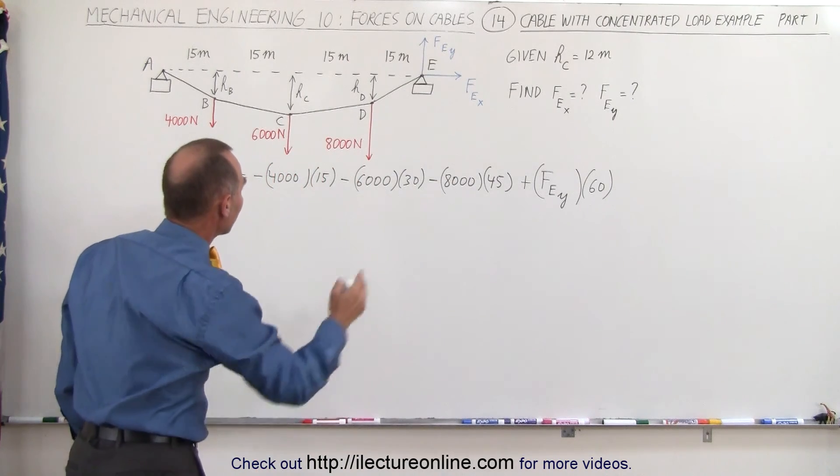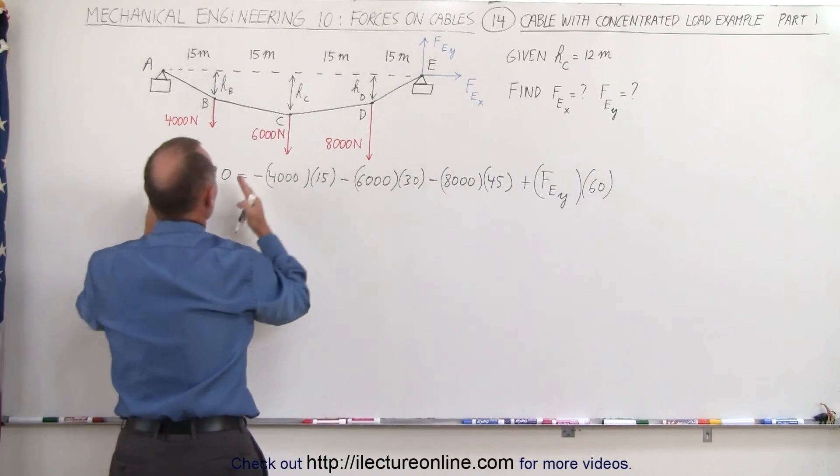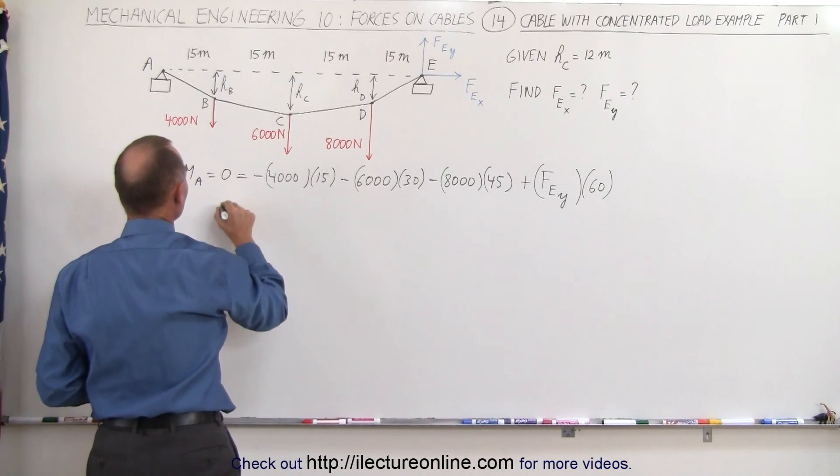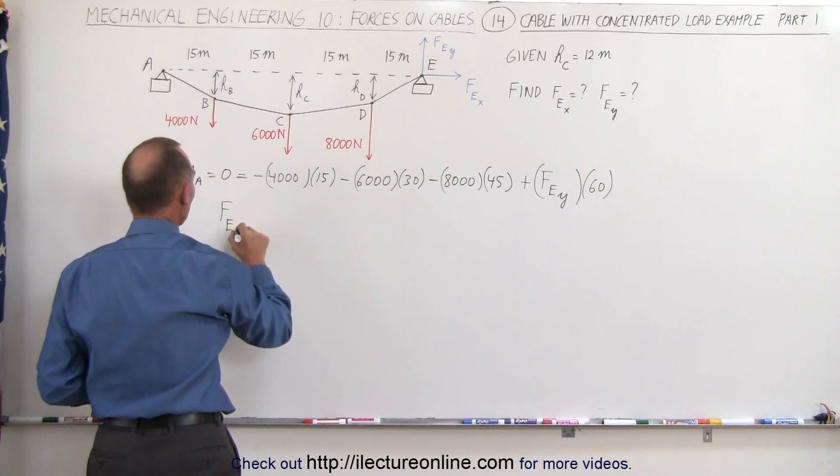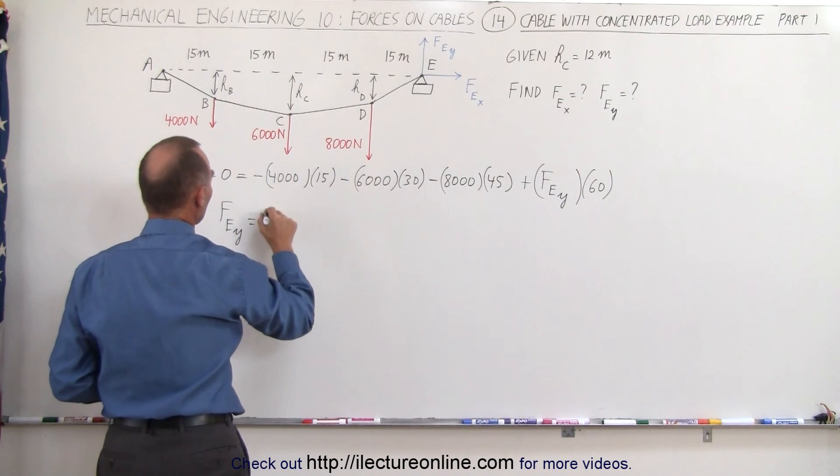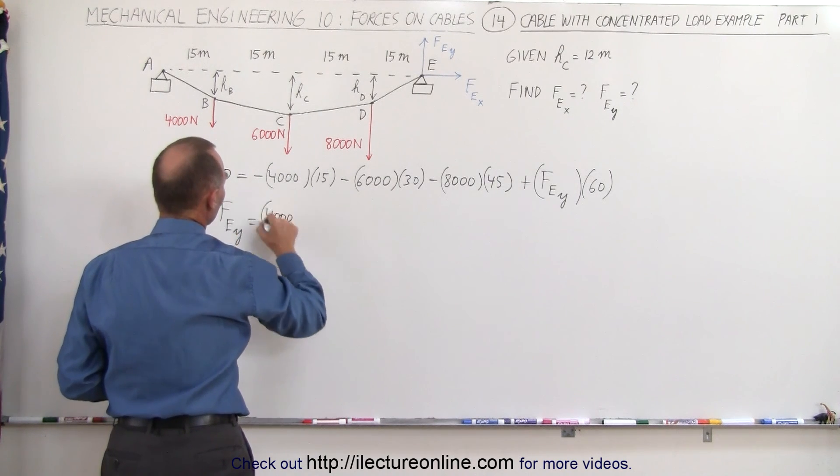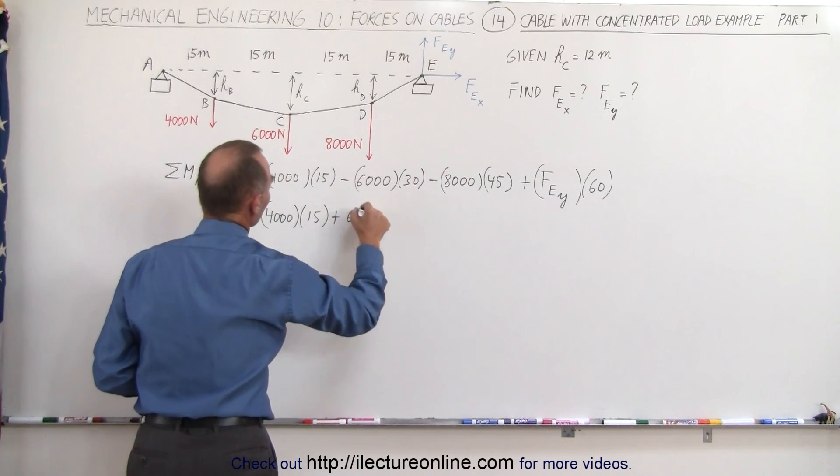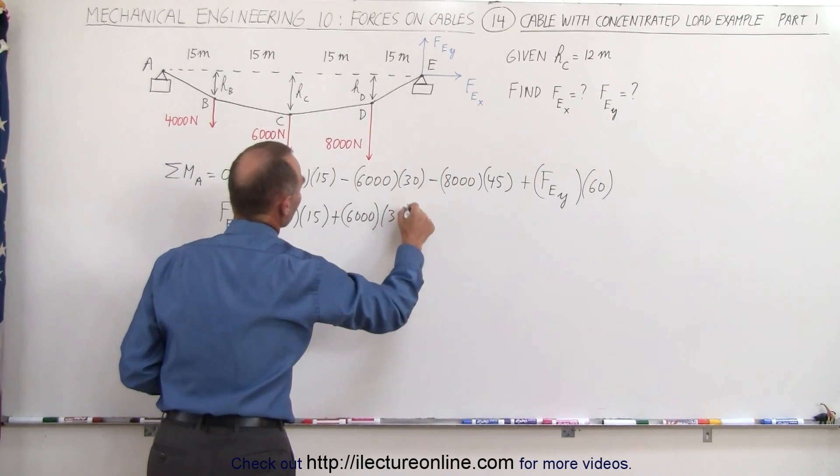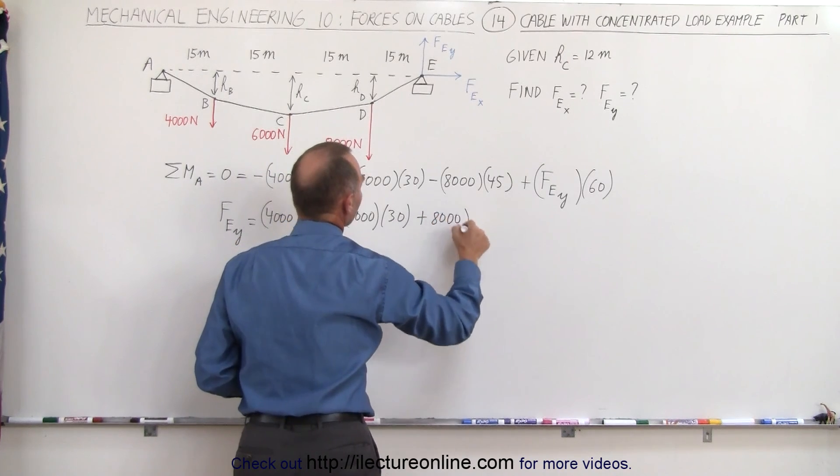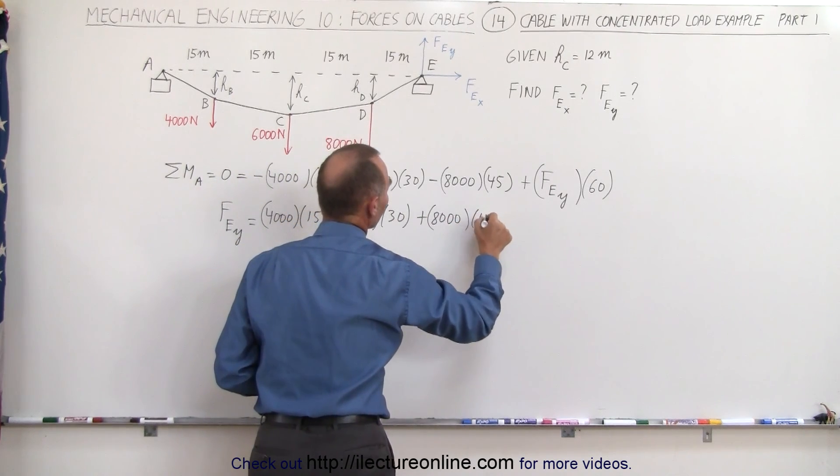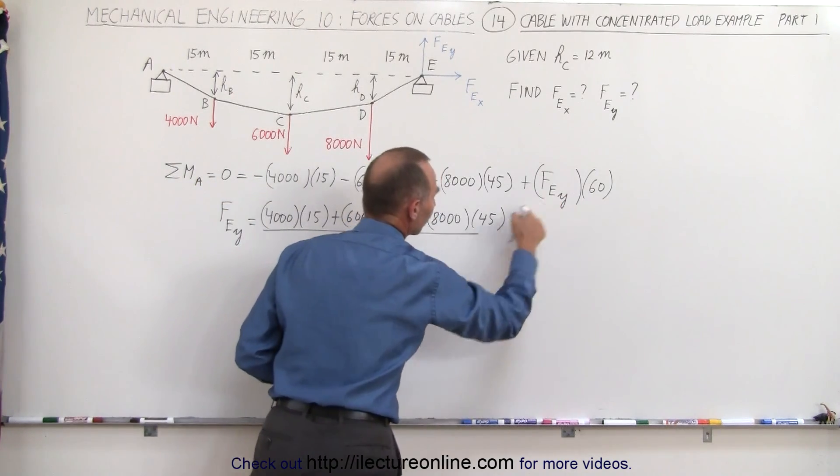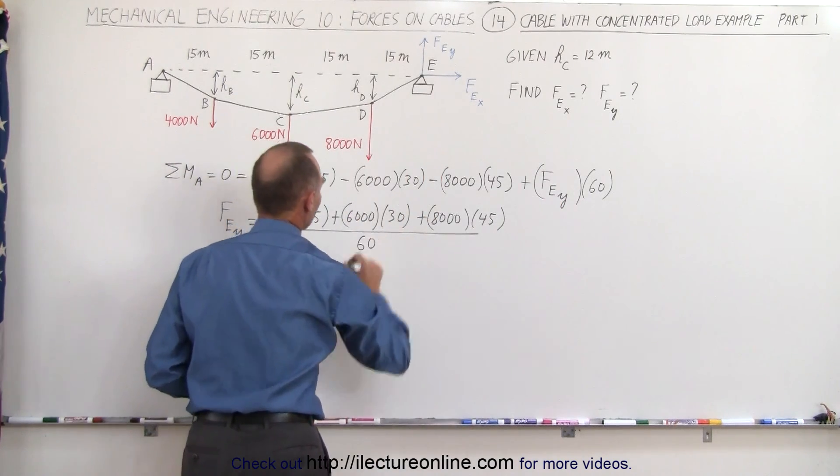Which means now that if we move all these three terms to the other side, they become positive, we turn the equation around. We now have the force at E in the y direction equals 4,000 times 15 plus 6,000 times 30 plus 8,000 times 45, and the whole thing then divided by 60.